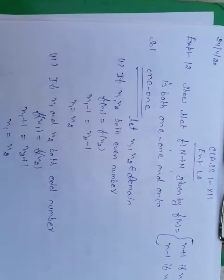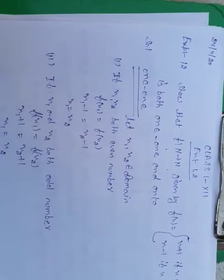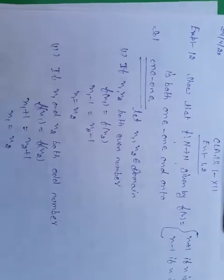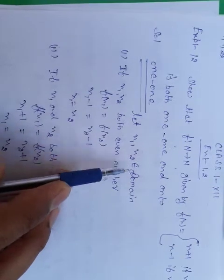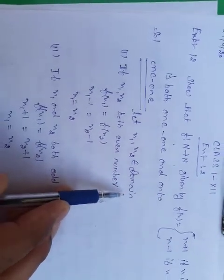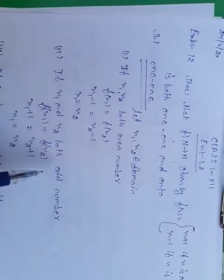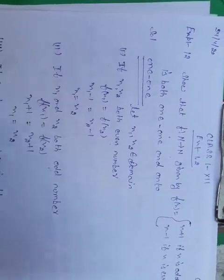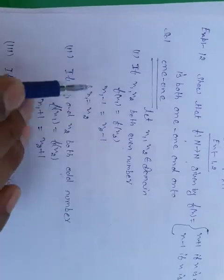For one-one, we need two different elements in the domain and prove their images are not different. Let x1 and x2 belong to the domain. There are four cases: x1 and x2 can both be even, both be odd, x1 even and x2 odd, or x2 even and x1 odd. We will discuss all of them.